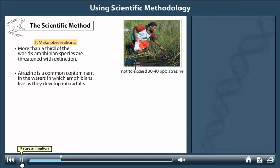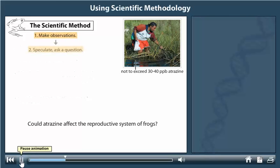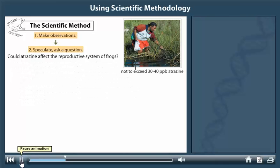Studies also indicated that atrazine could act as an endocrine disruptor in other animals. Could atrazine affect the reproductive system of frogs? This question represents the second key step of the scientific method.